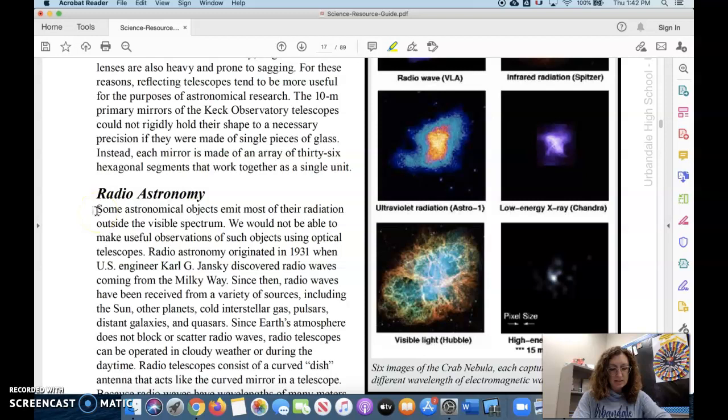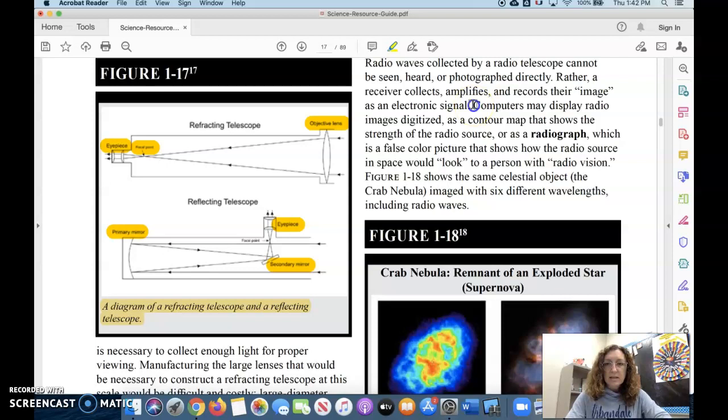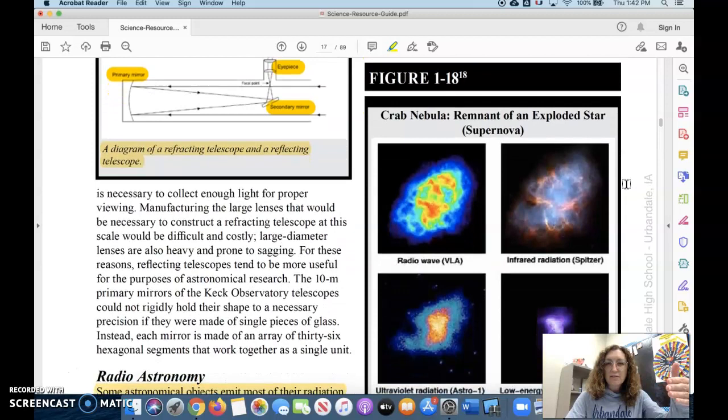So radio astronomy uses radio waves. You can't use an optical telescope to see them because it won't show up. From the data that's collected in something like a radio telescope, we have computers that create a radiograph.